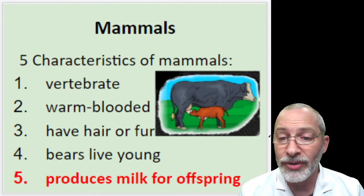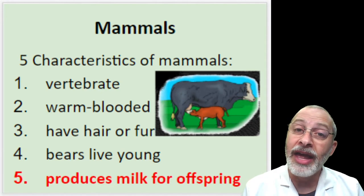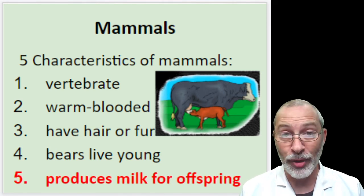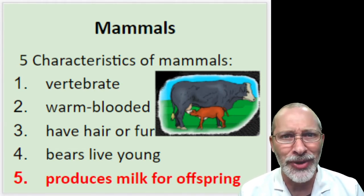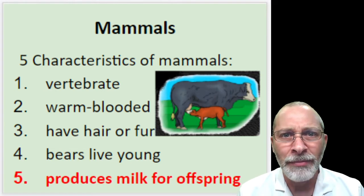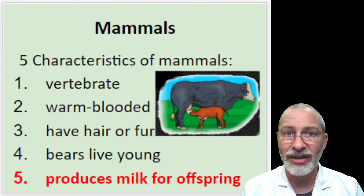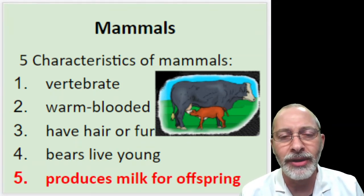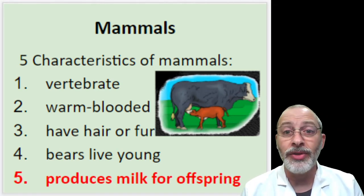Here are the five characteristics that mammals share: they are vertebrates, warm-blooded or endothermic, they have hair or fur, they bear live young, and they produce milk for their offspring. An interesting tidbit — humans may be the only species of mammals that have adult members still drinking milk. Most other mammals are weaned off their mother's milk at a relatively early age.